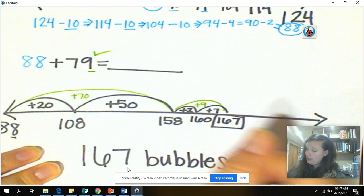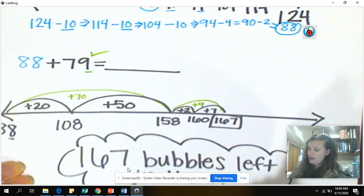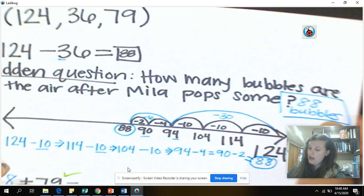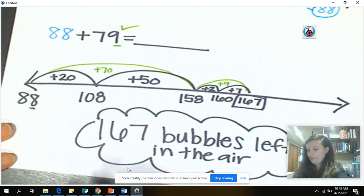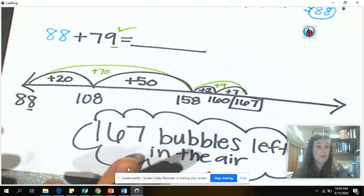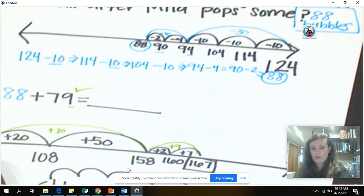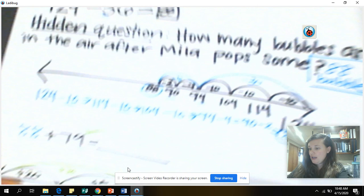We are talking about the bubbles at the end of the problem, how many are left in the air. So I went ahead and made that label a little bit more detailed. So we have our final answer of 167 bubbles left in the air for Mila to run through and pop some more. So you have a new number set for you to solve. You do not have to do the number line the way I did it. You can use whatever strategy works for you.